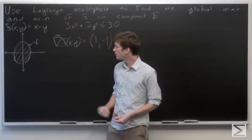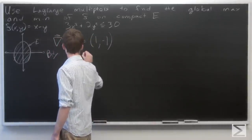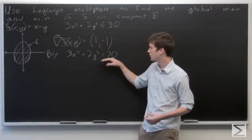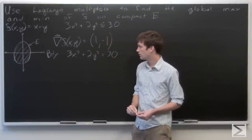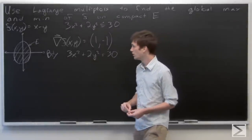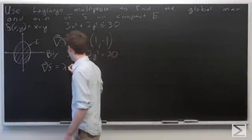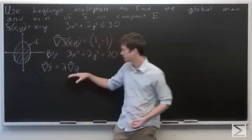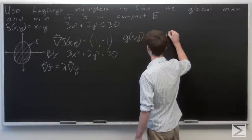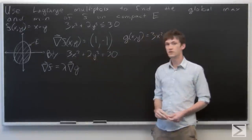Since there are no interior critical points of f on the interior of E, we'll use Lagrange multipliers to check the boundary. The boundary occurs when 3x² + 2y² = 30 rather than less than or equal to. We want to use Lagrange multipliers to find points satisfying this constraint where the gradient of f equals some constant lambda times the gradient of g, where g is just 3x² + 2y², so our constraint is a level set of g.